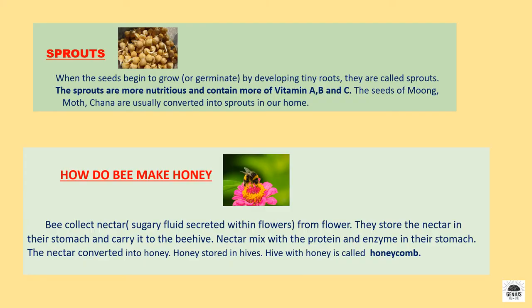Now, what are sprouts? When seeds begin to grow or germinate by developing tiny roots, they are called sprouts. Sprouts are more nutritious and contain more of vitamins A, B and C. So you should add sprouts to your breakfast or evening snacks. Seeds of moong and chana are usually converted into sprouts at home.